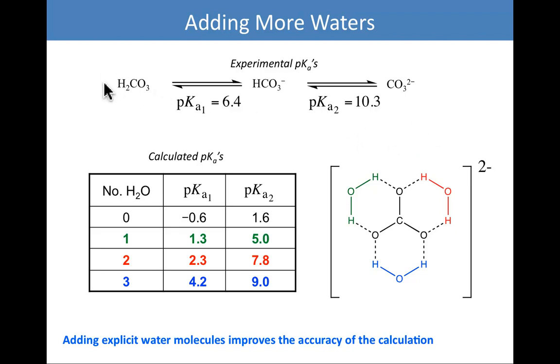We can explore if one water is good, maybe more than one water is better. Let's take a system where multiple waters might be expected to matter: carbonic acid. Carbonic acid has two pKas—one to make the bicarbonate ion, one to make the carbonate dianion. The first pKa is 6.4, the second pKa is 10.3. We can do the computation various ways. I've color-coded some waters: a red water, a green water, a blue water. We can do it with no waters at all. What you predict is the first pKa is minus 0.6—that's pretty bad, 7 pKa unit error. The next pKa is 1.6. You're off by almost 9 pKa units.